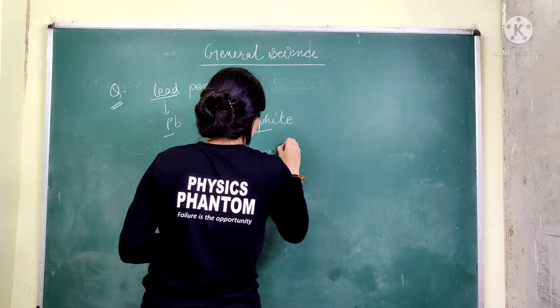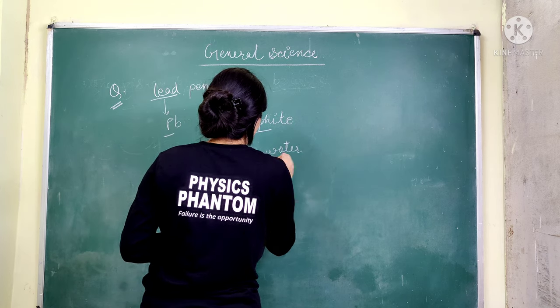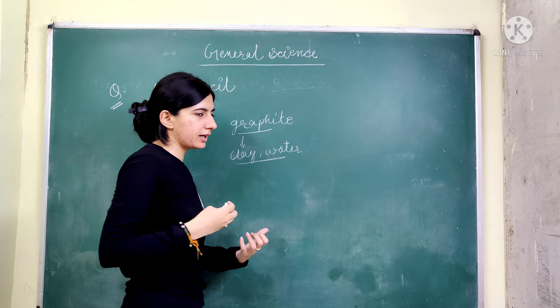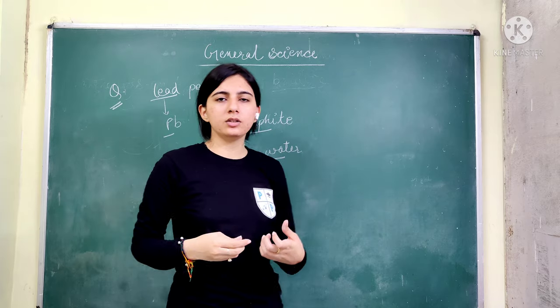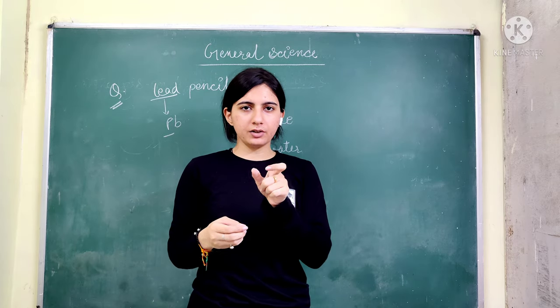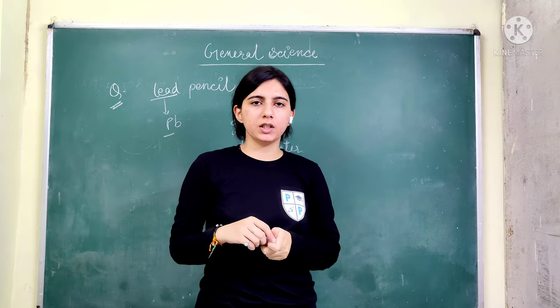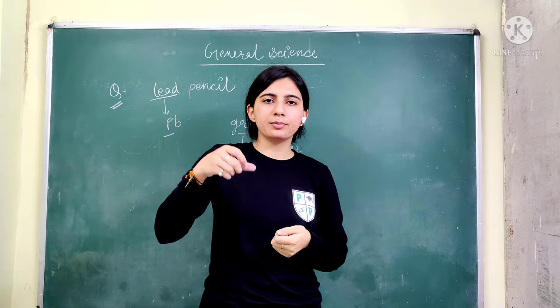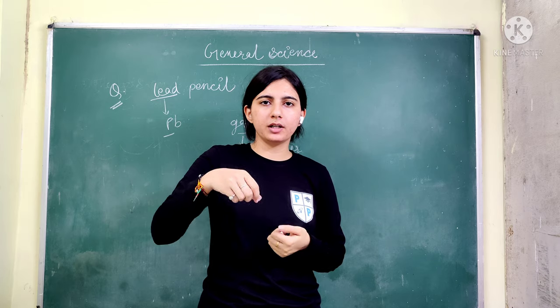Beyond graphite, a lead pencil is made using graphite mixed with clay and water, which are combined and processed to form the pencil core.